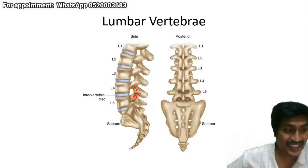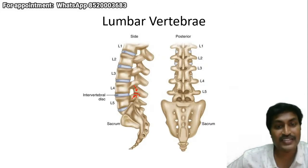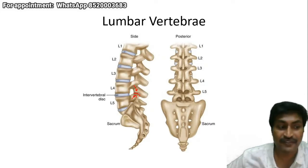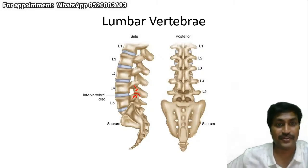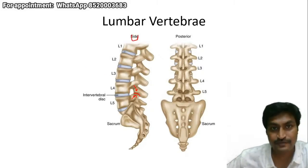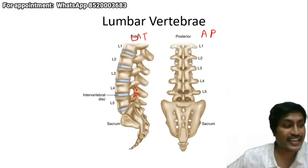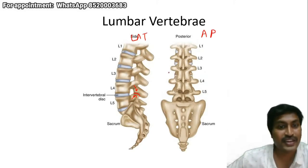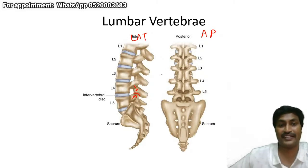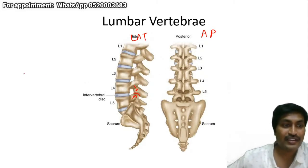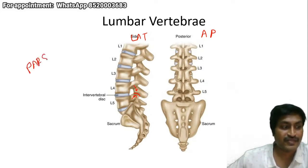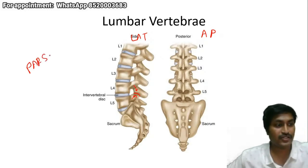To get the scottish dog appearance you have to take a lateral oblique view, which is never taken in clinical practice. What we take is an AP and lateral view. So scottish dog appearance is practically never seen in clinical practice. Make sure you all understand what pars interarticulares is before we move on to the next structure.